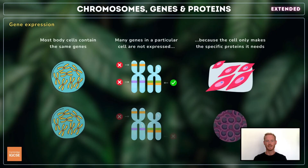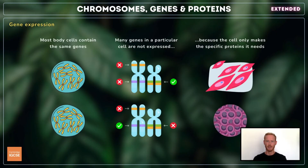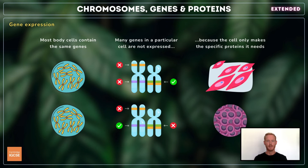Most body cells contain the same genetic information, but as they don't all have the same requirements for proteins, not all genes are actively expressed or turned on. Instead, each cell selectively expresses a specific subset of genes to produce only the proteins it needs for its specialised function. For example, liver cells express genes that produce enzymes involved in metabolism and detoxification, while muscle cells primarily express genes related to muscle contraction and energy production.